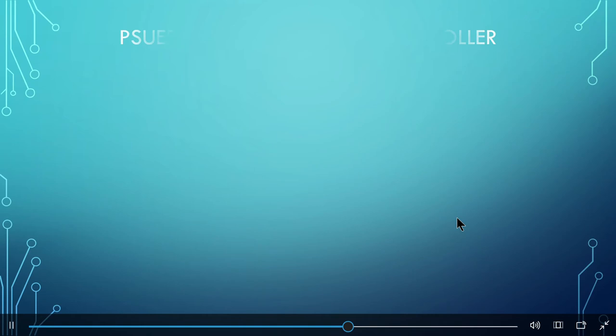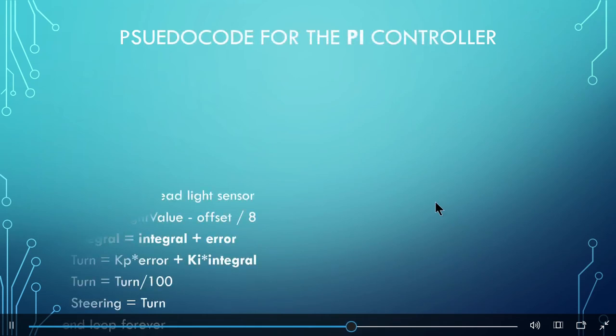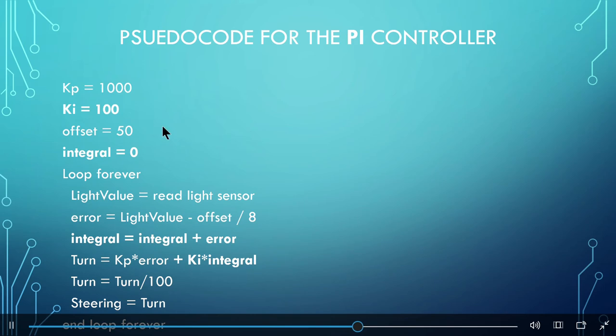The bold code shows the added code of the integral. The ki is the constant for the integral that is also multiplied by 100, so we don't have to hassle with all the decimals. We start the variable integral at 0, but it is changed later on in the code. In the loop, we add all the errors together. Finally, we add the constant times integral and add it to the constant times proportional to get the turn.